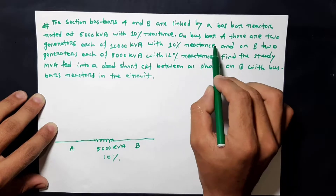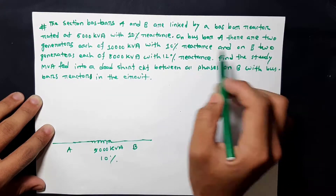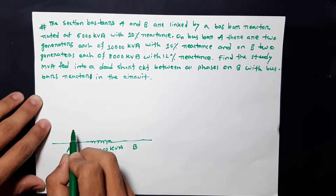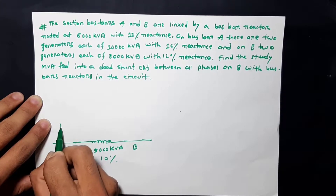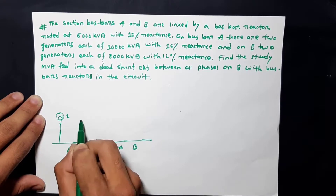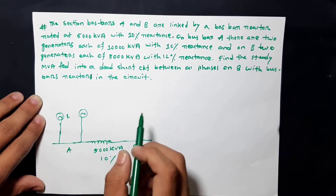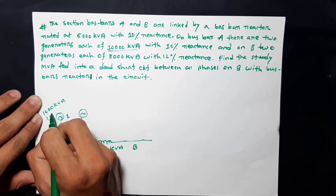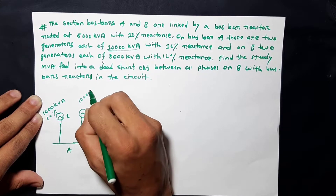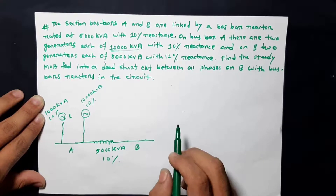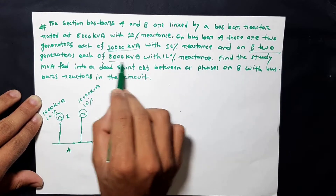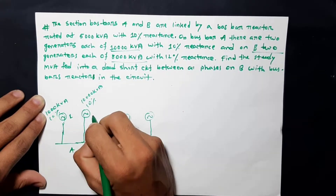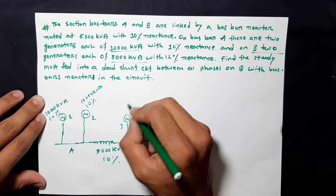On bus bar A, there are two generators each of 10,000 KVA with 10% reactance — generator 1 and generator 2. The reactor linking bus bars A and B has a rating of 500 KVA and 10% reactance. On bus bar B, there are also 2 generators: 10,000 KVA each with 12% reactance.